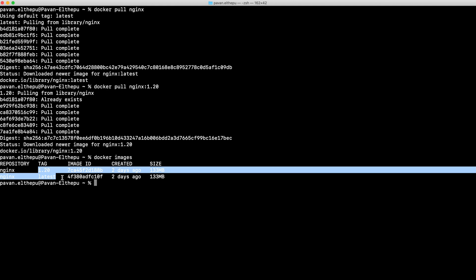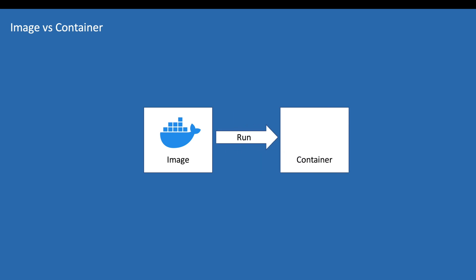Let's try to install version 1.20. You can see the 1.20 version is pulling from Docker registry. Now we have two different versions of nginx. Let's verify by running `docker images`. We have two nginx images with different tags: latest and 1.20. Please note that these are just images — we haven't created any container yet. When we run an image, that creates a container. The container is the place where our service actually runs. An image is just a blueprint to create the container.